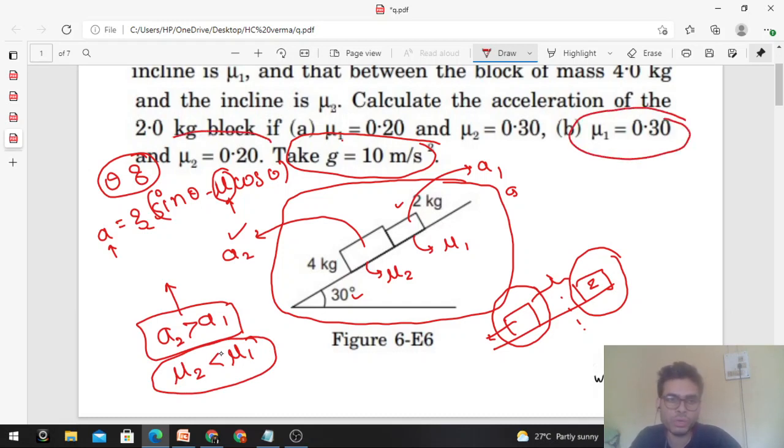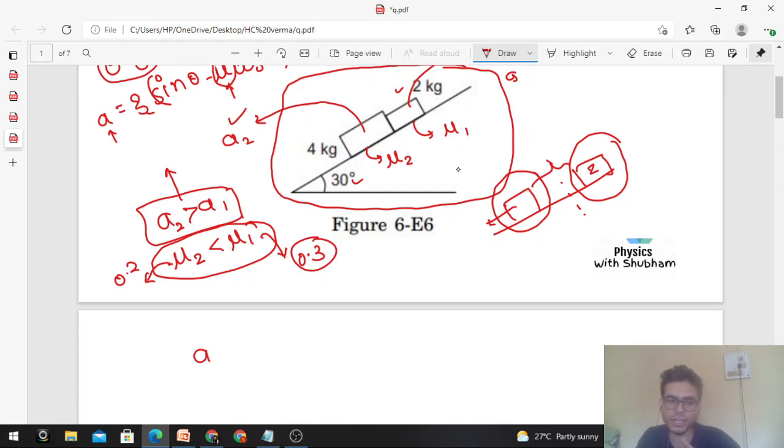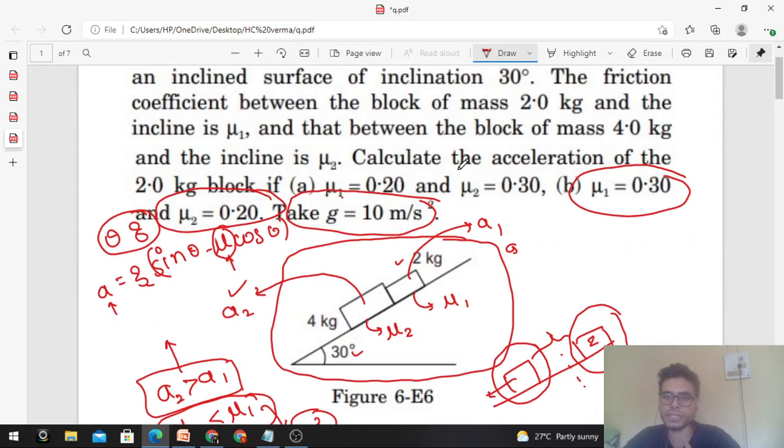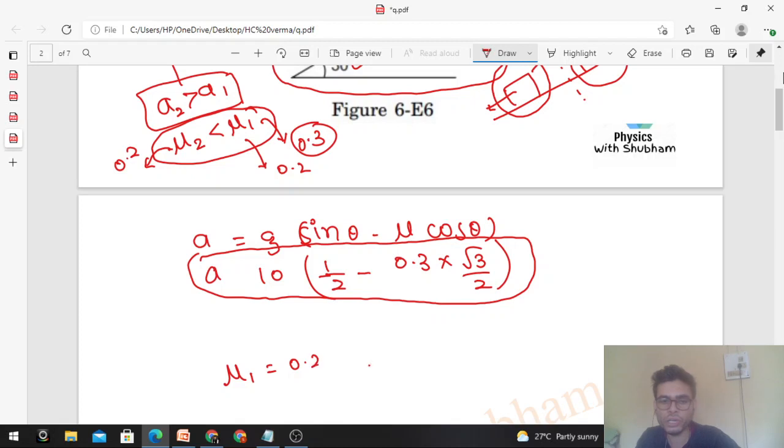So you can easily find out the acceleration of the 2 kg block, which is the first block. You can find out the value. This is the acceleration of the 2 kg block for case B. For case A, if you can see here, mu1 is 0.2 and mu2 is 0.3. What does that mean? Mu2 is greater than mu1. What does that mean? A2 will be less than A1.